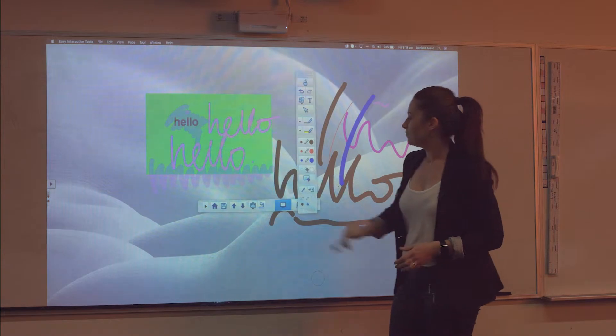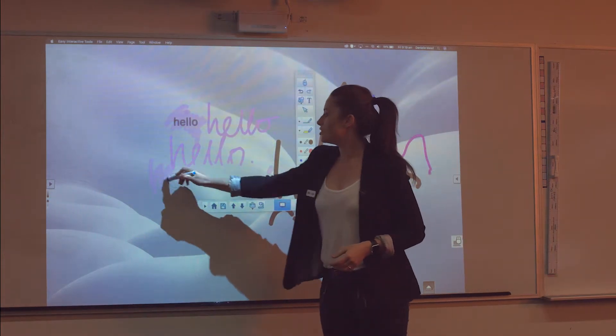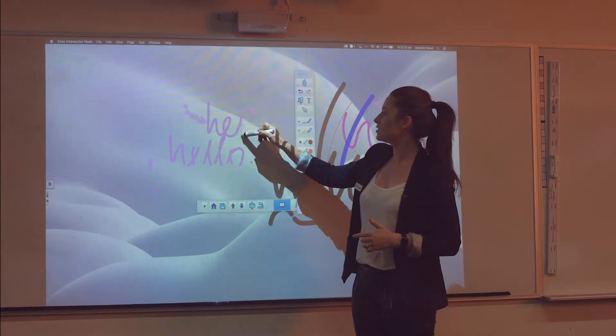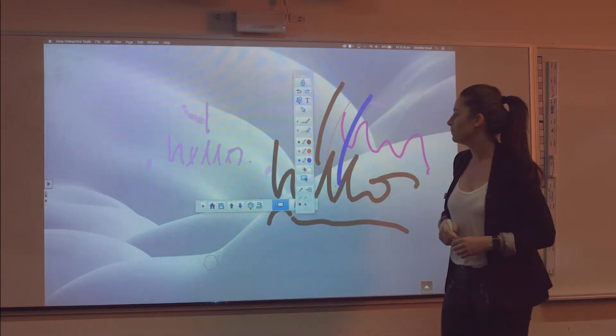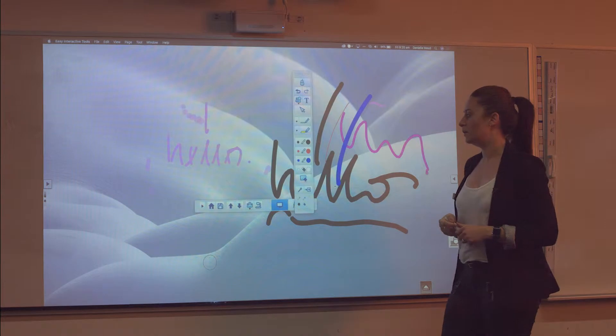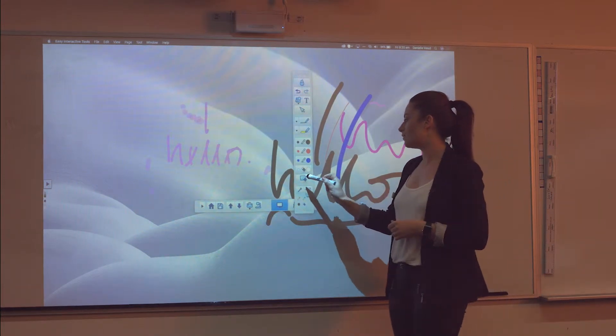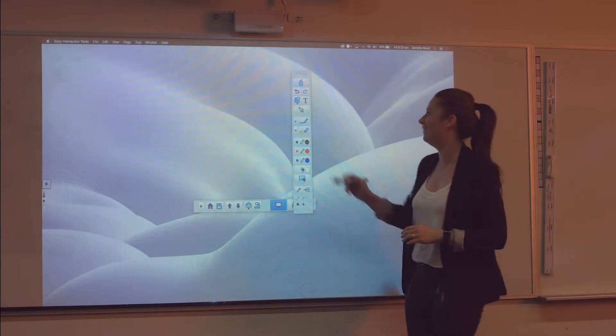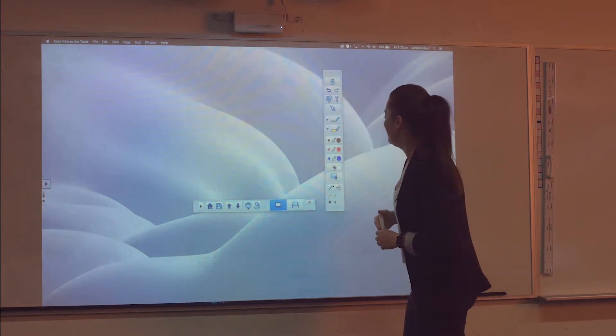Your eraser tool. Now if you've got any shapes or text, it will delete the whole lot. However, any freehand annotations you've done, you can delete parts of. And if your board is looking a little bit chaotic like this, my favourite button of all is the delete all. Wipes the clean, starts again.